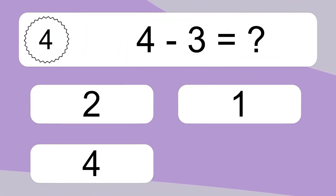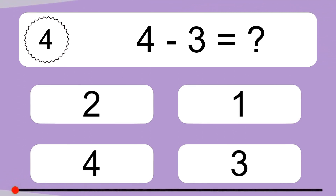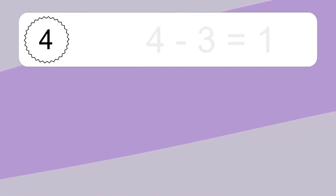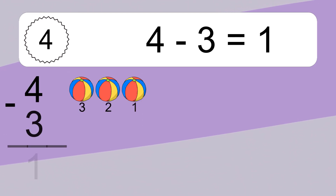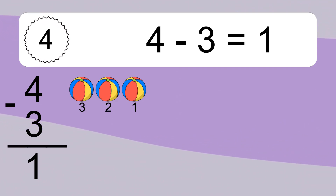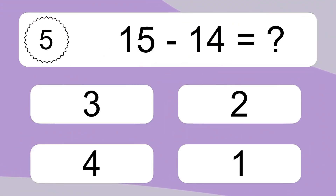4 minus 3 equals what? 4 minus 3 equals 1. Let's count it: 3, 2, 1.